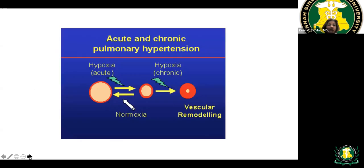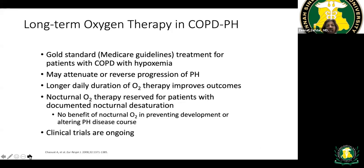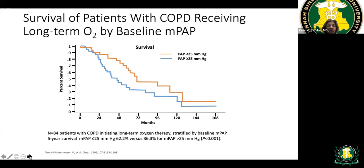Acute hypoxemia alone may not cause permanent damage, but chronic hypoxemia leads to vascular remodeling and pulmonary hypertension. The landmark NOTT and Medical Research Council (MRC) studies both demonstrated increased survival in COPD patients using supplemental oxygen — even 15 hours per day — versus no oxygen. Long-term oxygen therapy is critical for group three PH. Patients with lower baseline PA pressure on oxygen have better survival.